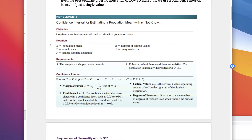Here's our table. Mu is the population mean, x-bar is the sample mean — that point estimate. Little s is the sample standard deviation, n is the number of values, and e is our margin of error. For a simple random sample, either or both of these conditions must be satisfied: the population is normally distributed, or you have n greater than 30. The confidence interval is: mu is somewhere between x-bar minus the error and x-bar plus the error.